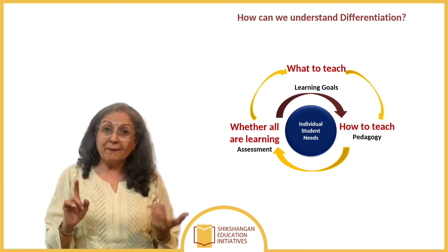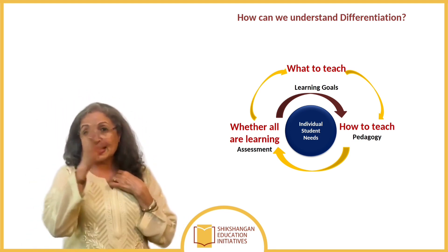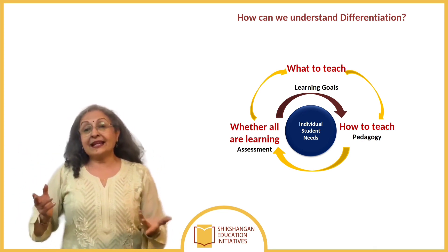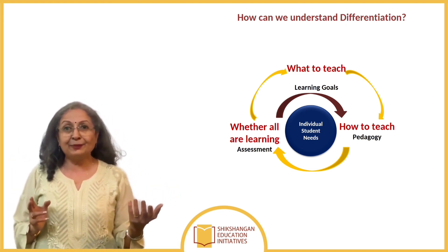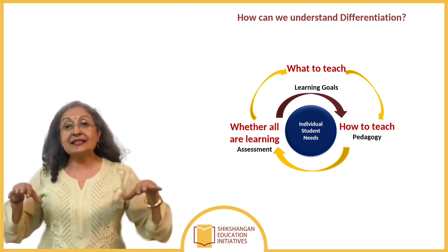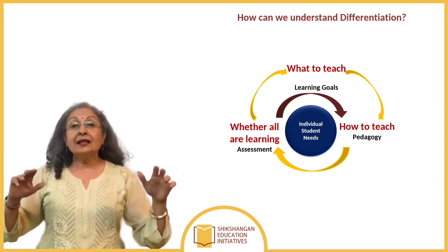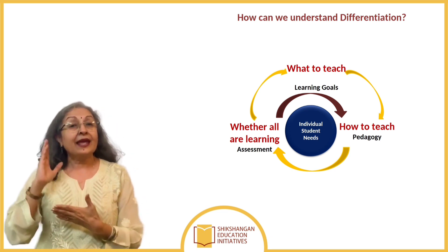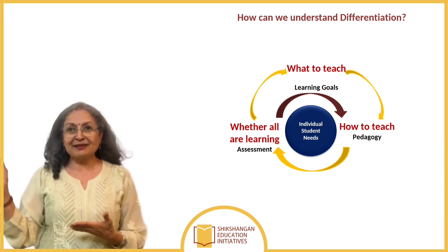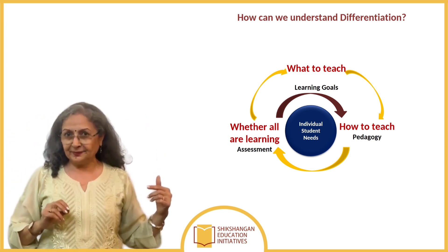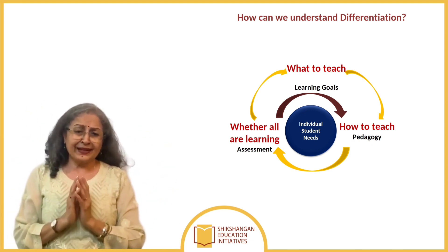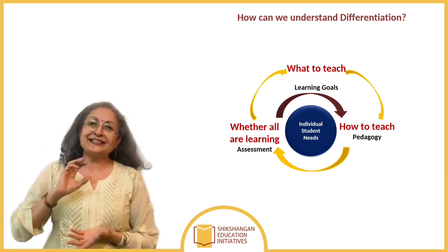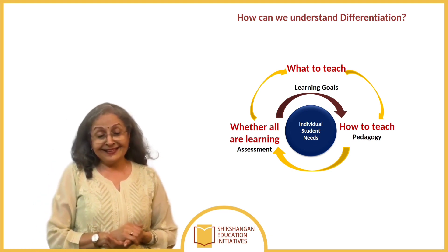We complete the cycle by asking: have my students actually learned? Are all of them at par with the learning objectives? Because it's a cycle, it gives me the opportunity to go back — it becomes formative assessment. This is where differentiation begins to come in: I realize that maybe not everybody has grasped what I wanted them to, because it was taught in a way not conducive for everyone.